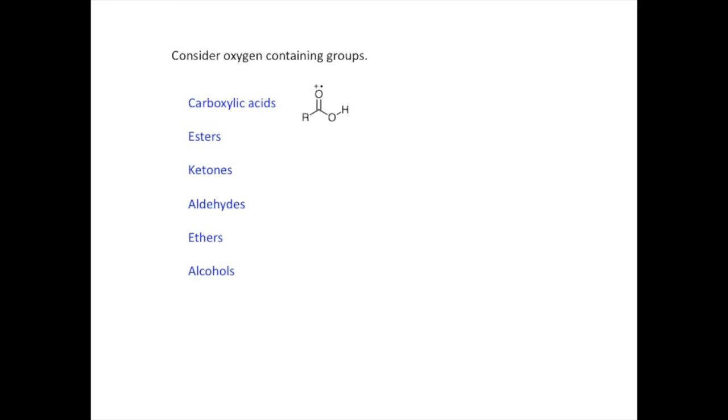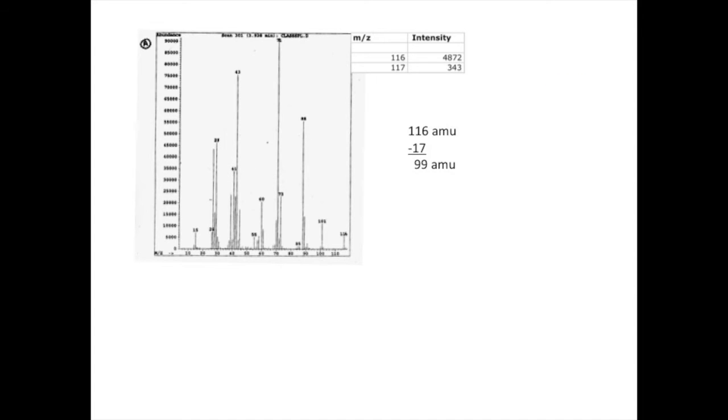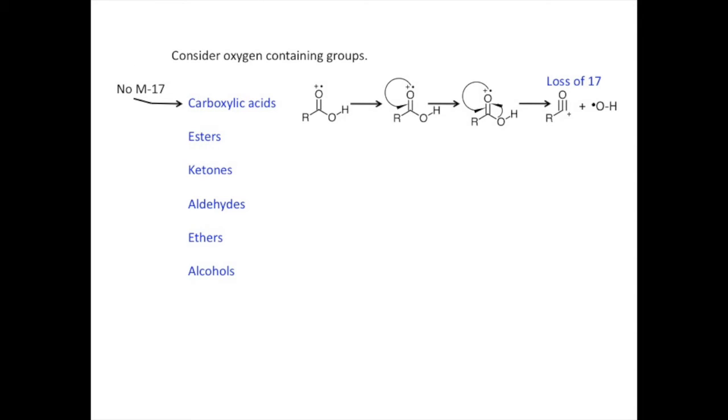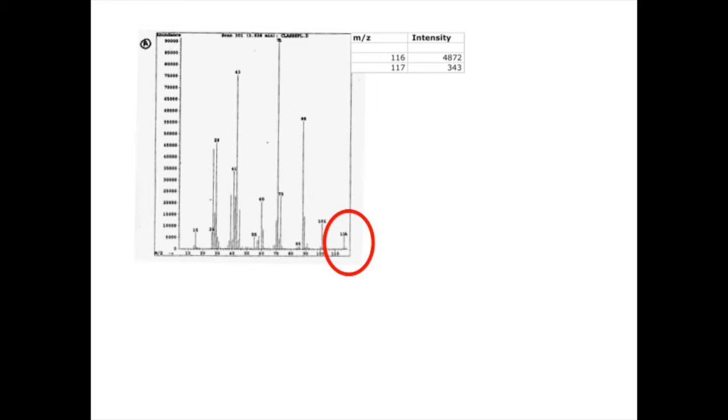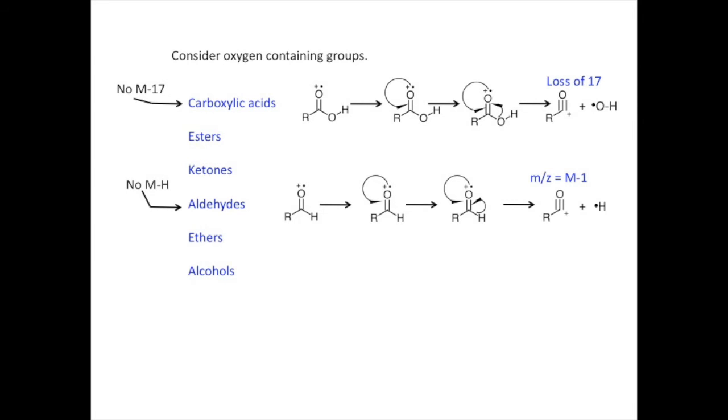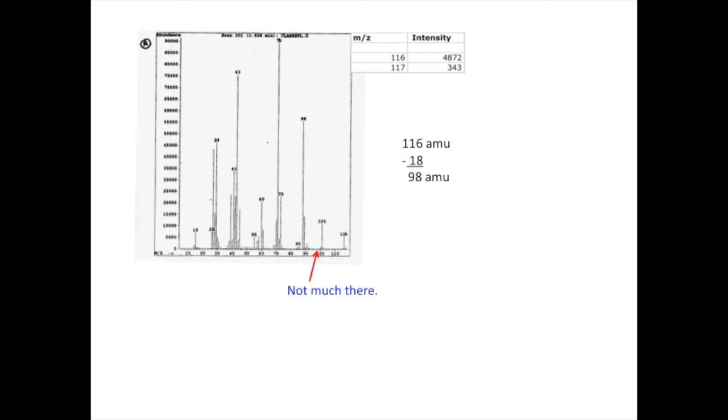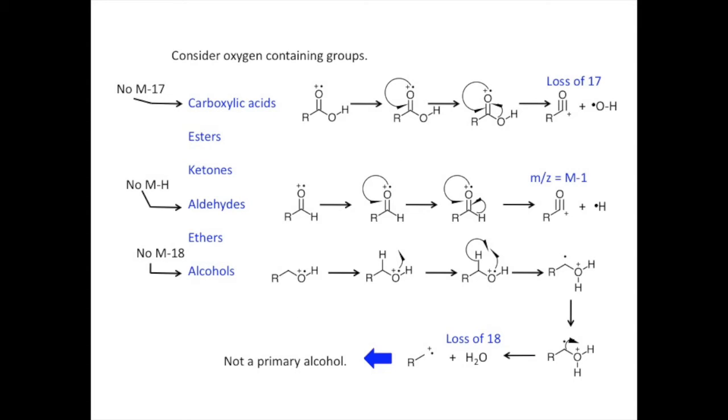For example, carboxylic acids tend to lose a hydroxyl radical, which means a loss of 17. A loss of 17 from a molecular weight of 116 gives us a mass of 99. But there is virtually no signal at 99, so we can rule out carboxylic acids. Aldehydes tend to show very strong loss of a hydrogen radical. But there is only a very tiny signal at 115, and aldehyde is an unlikely candidate. Primary alcohols are prone to losing water. Likewise, there is very little or no signal at 98 atomic mass units that corresponds to the loss of water. It's very unlikely that our unknown is a primary alcohol.